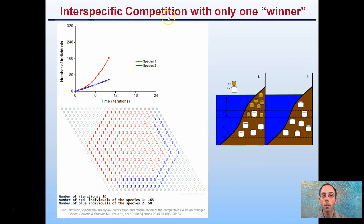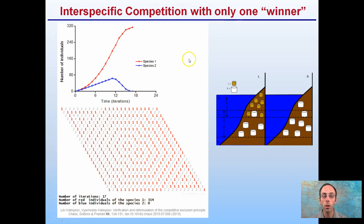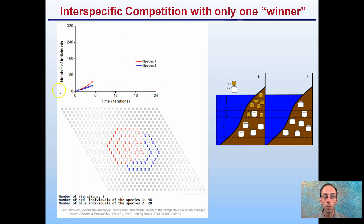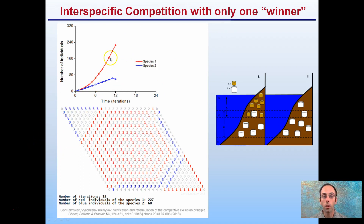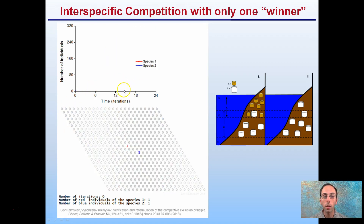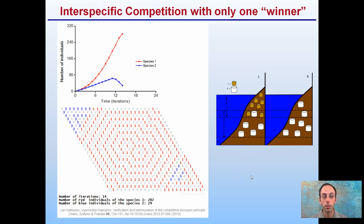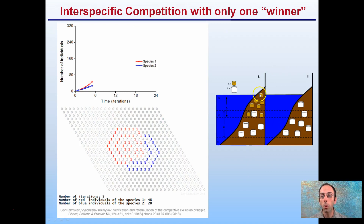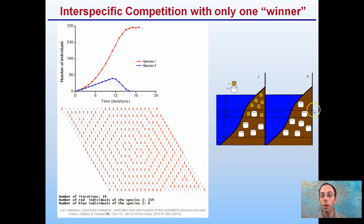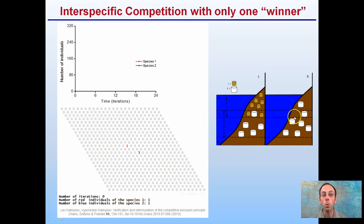In interspecific competition with only one winner, we see an example with blue and red species. Initially they both start off, then slowly species one, the red, starts to outcompete species two. Over time, the blue species gets pushed out entirely and only the red species survives. Similarly, the white can outcompete the brown and pushes it out, leaving only one winner in this interspecific competition.